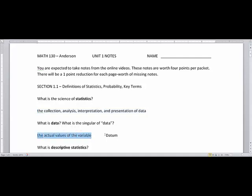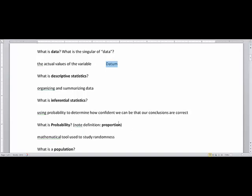Data is the actual values of any variable, and if you have a singular piece of data that's called datum. What is descriptive statistics? Descriptive statistics is the organizing and summarizing of data. In fact, chapter 2 in our first unit will be all about descriptive statistics.